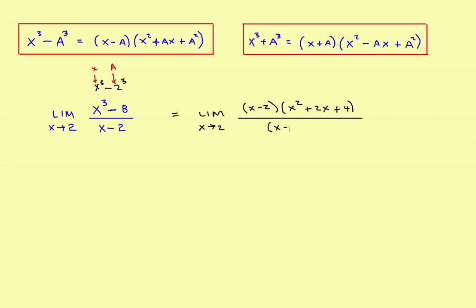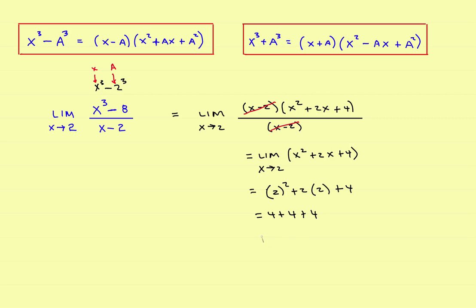This is all divided by x minus two. Just like in the first video, if you can cancel it out, it's a hole; if you can't, it's an asymptote. In this problem, the x minus two in the top cancels the x minus two in the bottom. What's left is the limit as x approaches two of x squared plus 2x plus four. Plugging in two gives you four plus four plus four, which equals twelve. That is the limit.